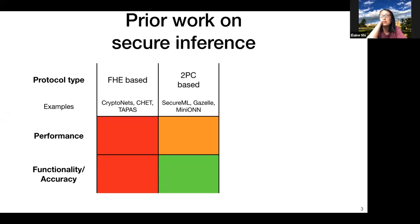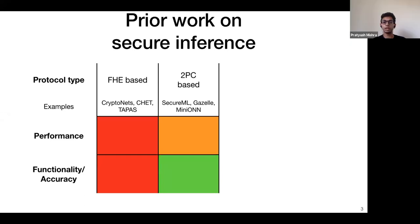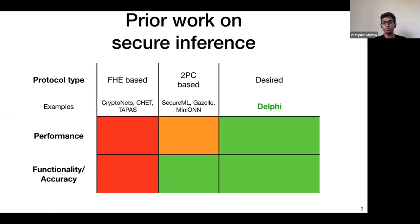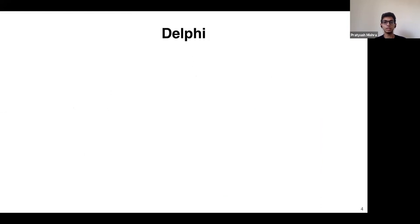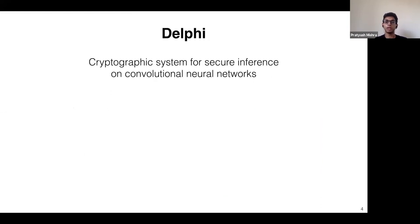To improve upon this, people developed 2PC-based solutions such as the state-of-the-art Gazelle. These improve in terms of the class of networks supported and in performance, but the gap from native execution is still quite large. The goal in Delphi is ambitious: to close this gap, support a wide class of networks, while minimizing the difference between native and cryptographic execution.